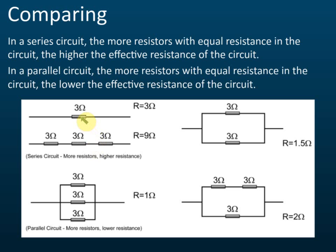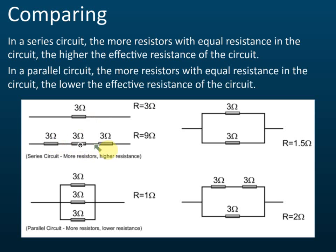Let's start with a simple one. If we have one resistor of 3 ohms, the resistance is 3 ohms. If we connect three of the same resistors in series, the effective resistance becomes 9 ohms. So in a series circuit: one resistor is 3 ohms, two resistors give 6 ohms, three resistors give 9 ohms. The more resistors in series, the higher the resistance.